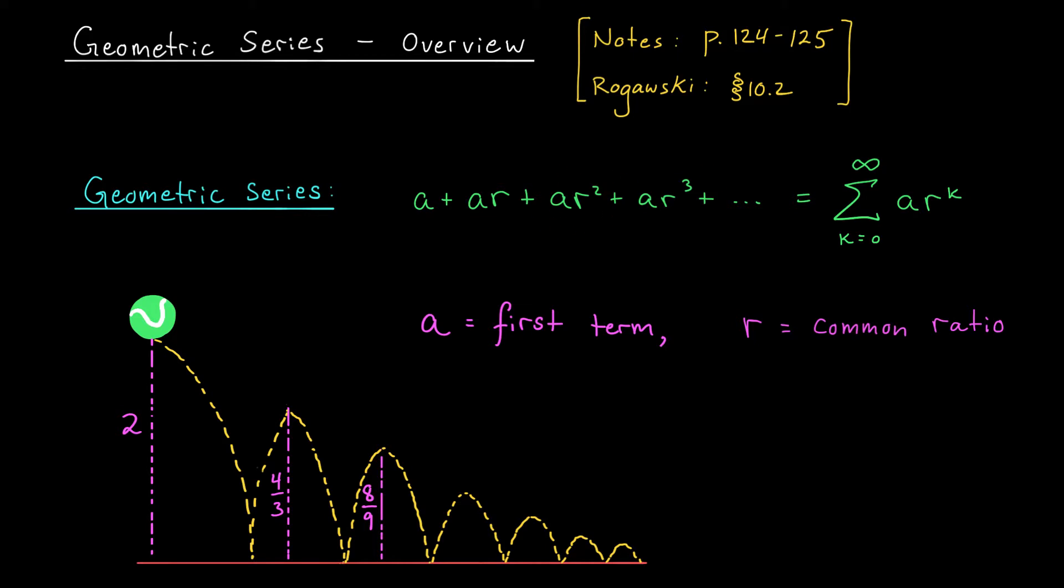Not only are these series quite nice to work with mathematically, they also show up in a variety of real world problems. Suppose for example that you have a ball that's dropped from a height of two meters. After each bounce, the ball loses some energy and comes back up to two thirds its previous height. The question is, how much distance does the ball travel while descending?